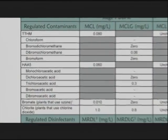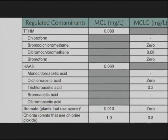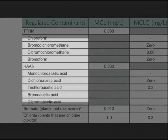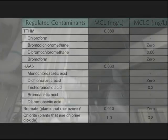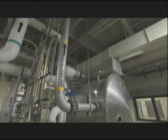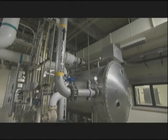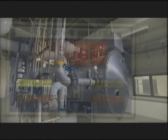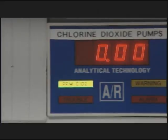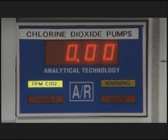Regulated contaminants under both the Stage 1 and Stage 2 rules include the four trihalomethanes and five haloacetic acids, along with bromate for plants that disinfect with ozone and chlorite for plants that use chlorine dioxide.